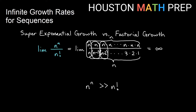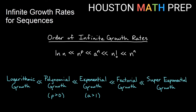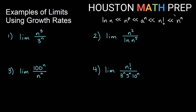This gives us the structure of slowest to fastest growth across all five families. Logarithmic growth, while infinite, is the smallest of the infinite growths. Next is polynomial growth, followed by exponential growth, then factorial growth, and the fastest is super exponential growth. If we keep these rates in mind, many limits can be solved very quickly.